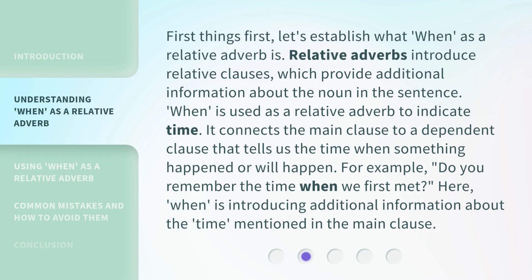First things first, let's establish what 'when' as a relative adverb is. Relative adverbs introduce relative clauses, which provide additional information about the noun in the sentence. 'When' is used as a relative adverb to indicate time. It connects the main clause to a dependent clause that tells us the time when something happened or will happen.